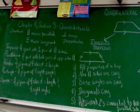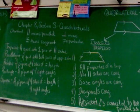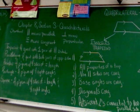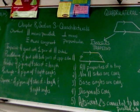The upside-down T means perpendicular. Perpendicular means they form a right angle underneath. And the wavy line with the equal sign underneath it means congruent. Remember, when we're talking about geometry, we don't say two angles are equal, we say two angles are congruent.